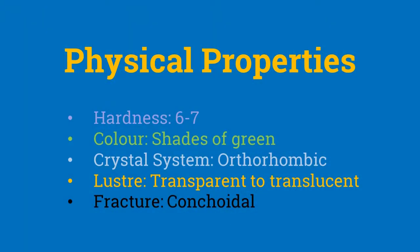Coming to physical properties, minerals of the olivine family have a hardness of 6–7 and appear to have a green color. However, different minerals may have a color ranging from pale green to grayish green. In fact, fayalite has the darkest green color, as the color becomes deeper with increasing iron content. All olivines crystallize in the orthorhombic crystal system. Olivine is transparent to translucent in luster and breaks with conchoidal fracture.